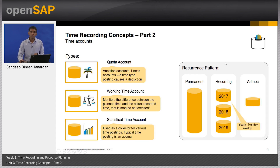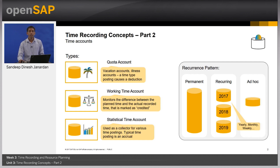The recurrence specifies how often instances of a time account type are created. They could either be permanent, meaning there's only one time account instance for the entire time profile validity. They could be recurring, with different instances based on the recurrence frequency — monthly or yearly, for example — each having a corresponding bookable period. There are also ad hoc time accounts, which are non-rule-based quota accounts assigned to an employee manually as necessary, for example maternity or paternity leave.